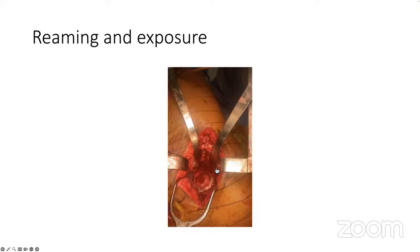Other things you can do to increase exposure beyond the anterior superior capsule release: you can also release the gluteal sling if necessary. I haven't done that in a while, but in some contracted cases it's hard to get the femur to move more anteriorly. You can release it partially or totally and repair it at the end. That will help to improve exposure as well if necessary.